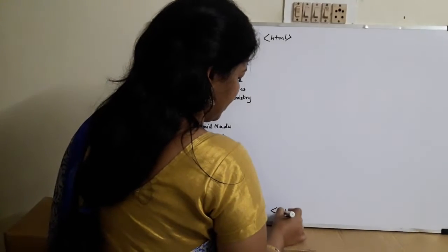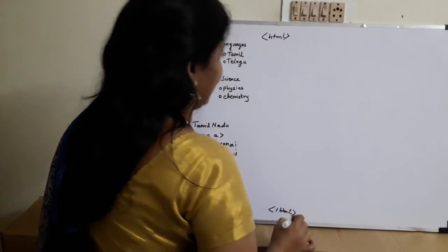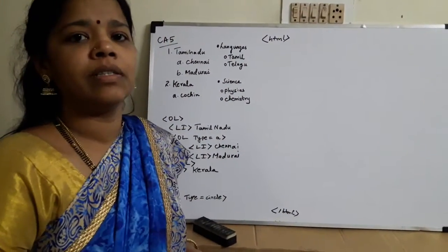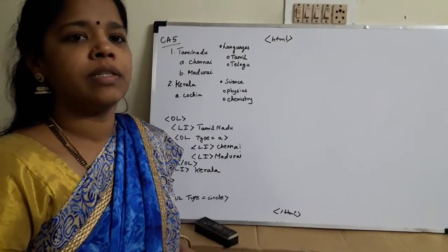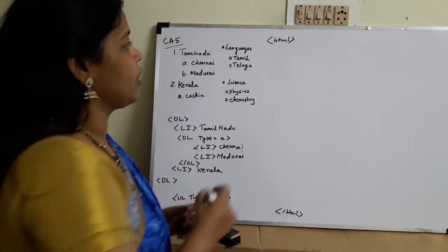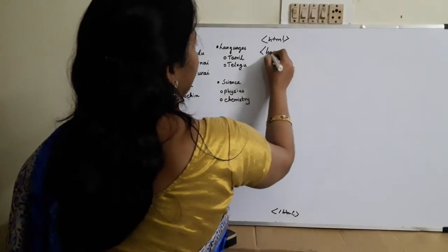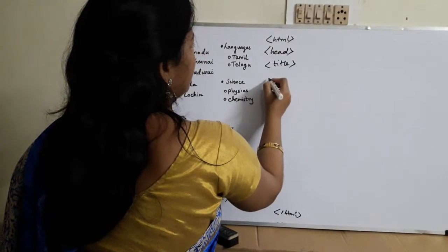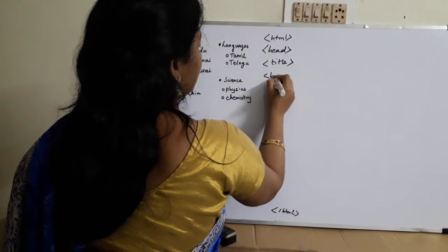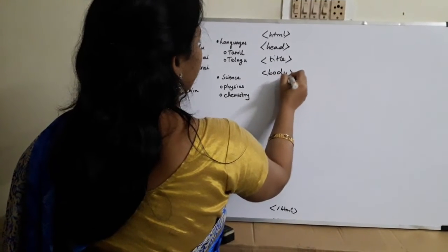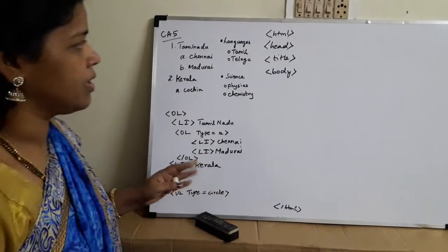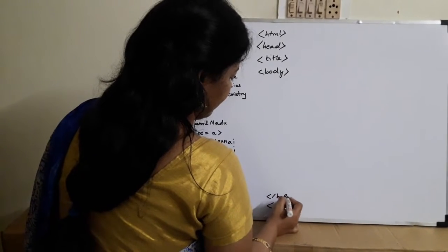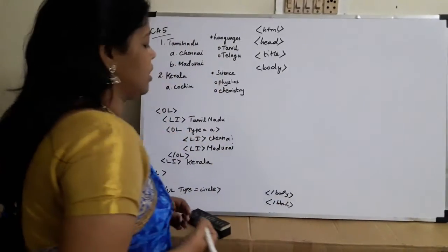HTML is a Hypertext Markup Language. You should write this program in Notepad, then save it and open it in Internet Explorer. The program has two parts: the head section and the body section. The head is used for giving the title of the program. The body section is where you write the entire program — the actual content — and you have to give a closing body tag before the closing HTML tag.